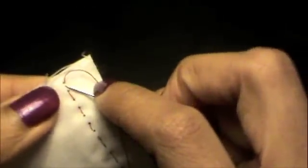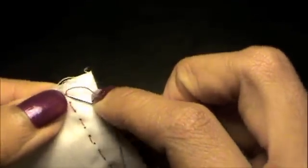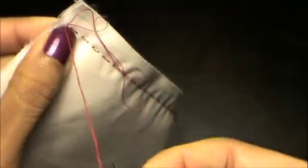At the end you're going to tie it off by making a small knot by catching a small bit of the fabric, pulling it through, and then putting your needle through the loop.